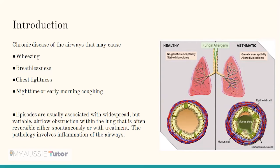The pathology basically involves inflammation of the airways. As you can see in the diagram, healthy lungs or healthy alveoli show no genetic susceptibility to allergens and the microbiome in the lungs is stable without any wheezing, blockage, inflammation, or epithelial cell inflammation. Whereas in an asthmatic individual, the microbiome of the lungs and alveoli is altered — the person is genetically susceptible to allergens, leading to development of asthma, where epithelial cells become inflamed, release mucus, and a mucus plug is formed causing airflow obstruction, wheezing, breathlessness, and tightness.